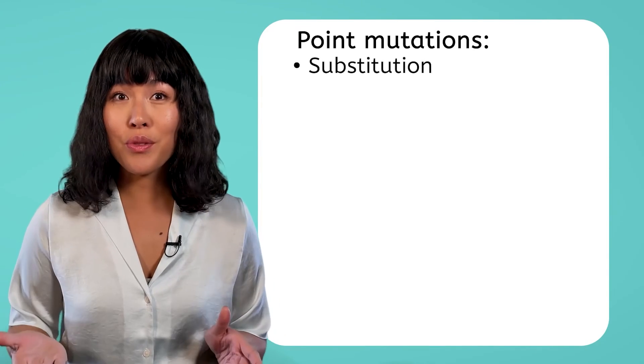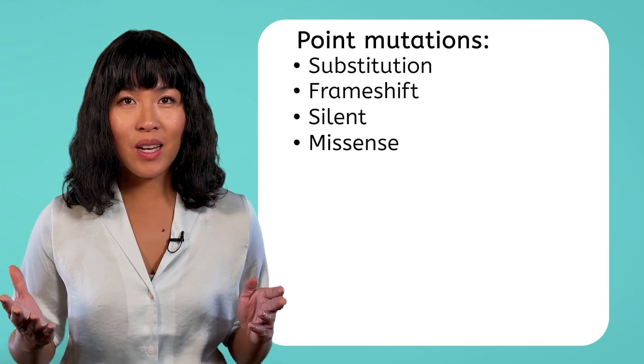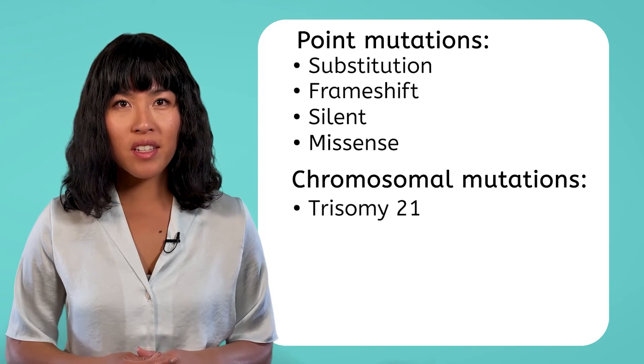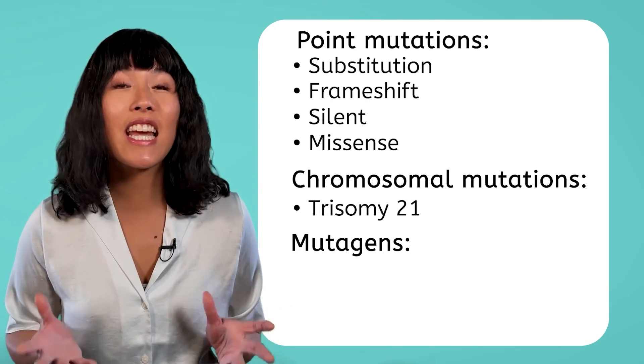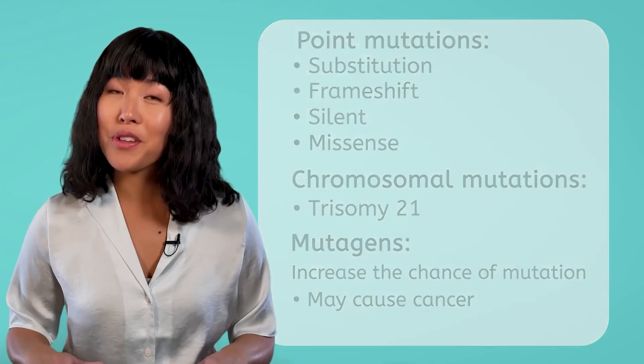As we went through the lesson today, we saw some examples of point mutations, like substitution and frameshift mutations. These mutations could either be silent or missense. We also looked at ways in which entire chromosomes could be inherited with mutations, such as trisomy 21. And then we explored a few things that can increase the chance of mutation, and potentially cause diseases like cancer. To finish up our unit on molecular genetics, next time we'll look at some of the ways we use technology to both understand DNA and even sometimes manipulate it. Tune in next time to learn more. And until then, remember — biology isn't just science, it's the way of life. See you next time!